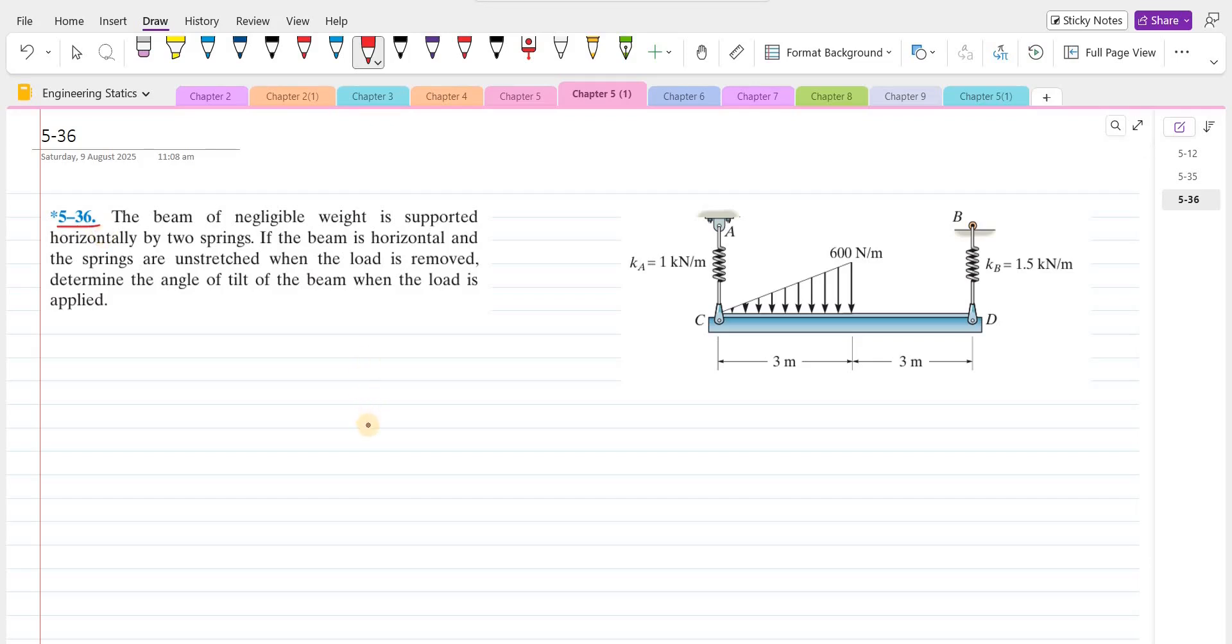According to this problem, the beam of negligible weight is supported horizontally by two springs. If the beam is horizontal and the springs are unstretched when the load is removed, we have to determine the angle of tilt of the beam when the load is applied.